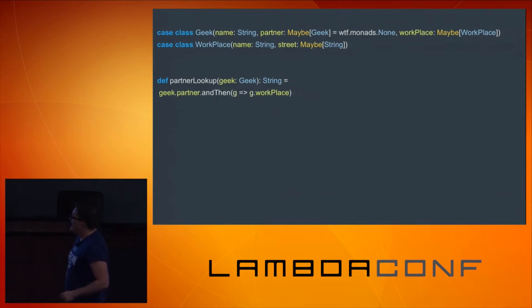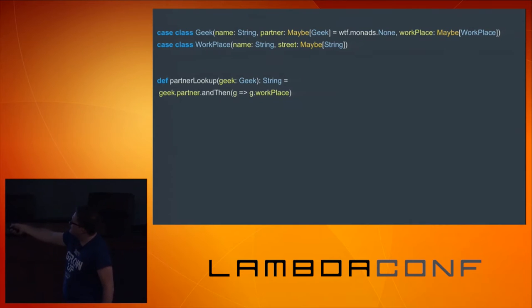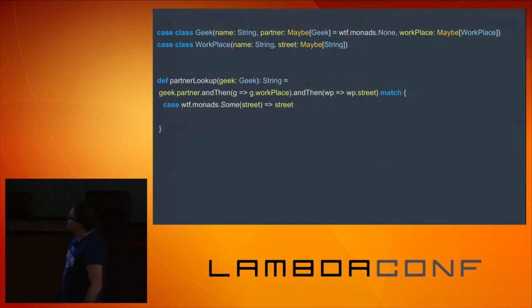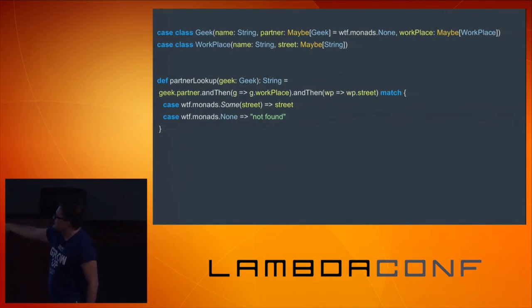So we take our geek partner and we are calling the andThen method on it. If the value exists, we take the workplace. And having that workplace, we will take the street and return it. That value will pattern match: if we have the street, we will return that street, and if it's None, we will simply say it's None, not found.